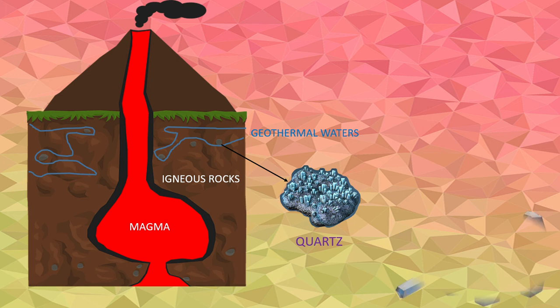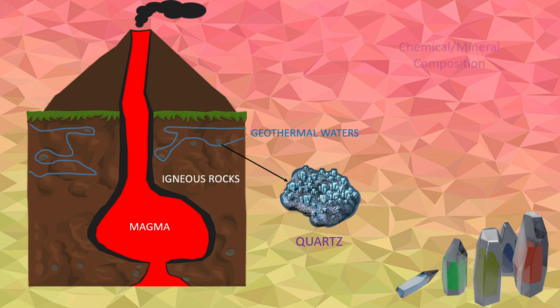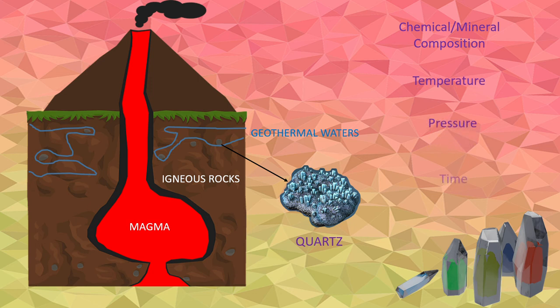The shape and color of quartz crystal formed depends on various environmental conditions such as chemical and mineral composition, temperature, pressure, time, and space.